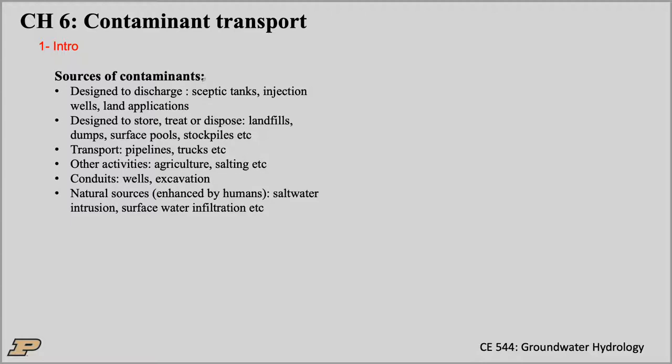Here's a list of sources of contamination — this is from Fetter's Contaminant Hydrogeology. Some sources are designed to discharge contaminants: septic tanks, injection wells. For example, CO2 — nowadays there's a lot of research on injecting liquefied carbon dioxide back into the earth so it doesn't go into the atmosphere. That's an example of a system designed to discharge contamination. Land application also — think of wastewater sludge extracted from your treatment plant and applied onto a field; those things usually have a lot of contaminants that go directly on the fields.